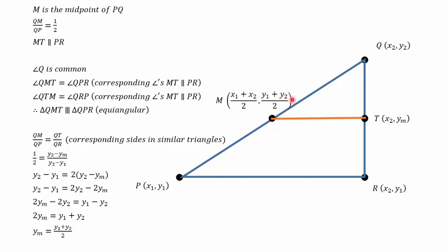If I then replace my ym with my y coordinate, I've got my midpoint formula, which is just x1 plus x2 over 2, and y1 plus y2 over 2 for my y coordinate.